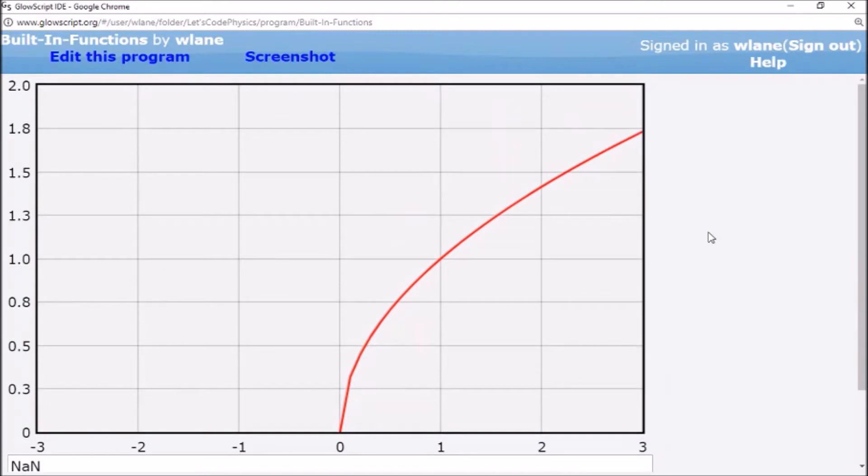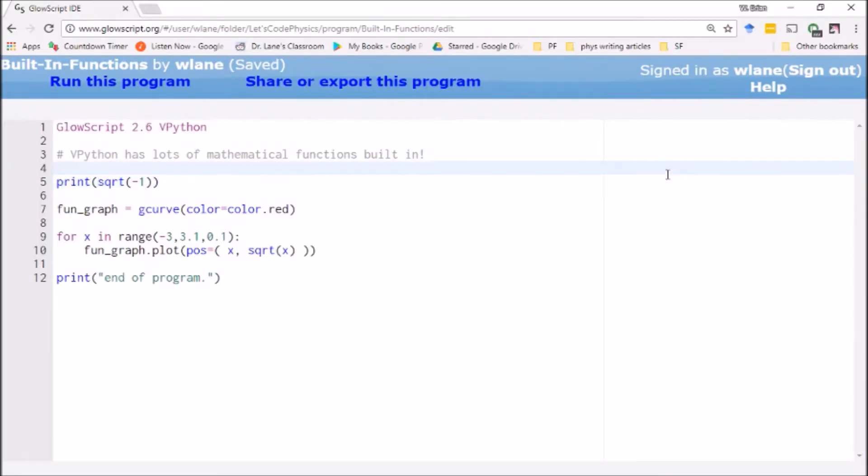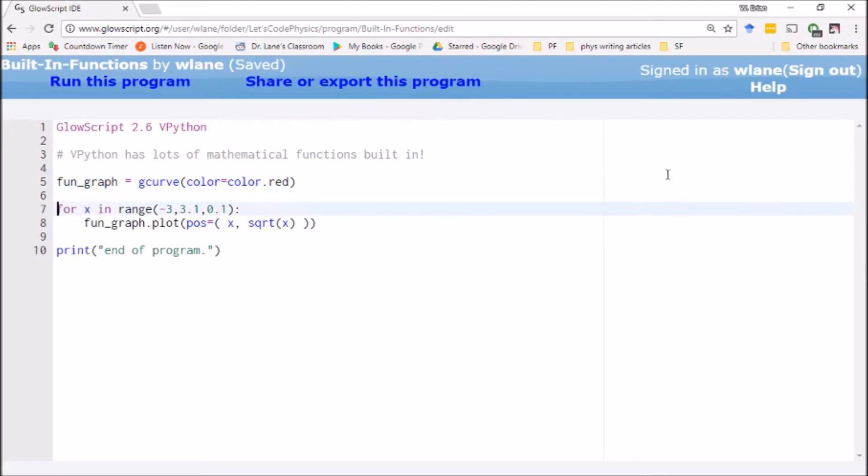It gives me NAN. So I'll have to do some freshening up on how vPython handles complex numbers. That'll be a future video.